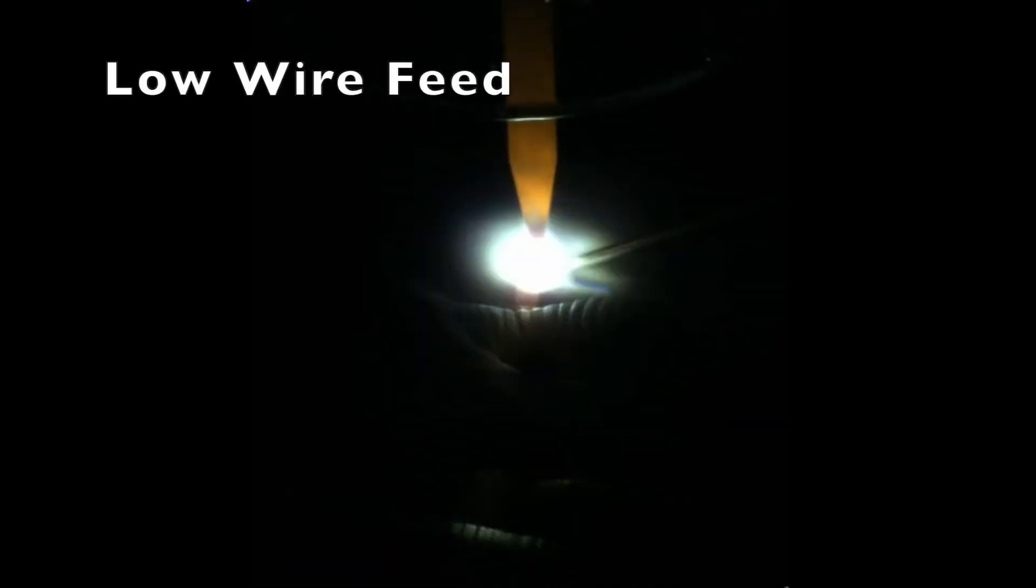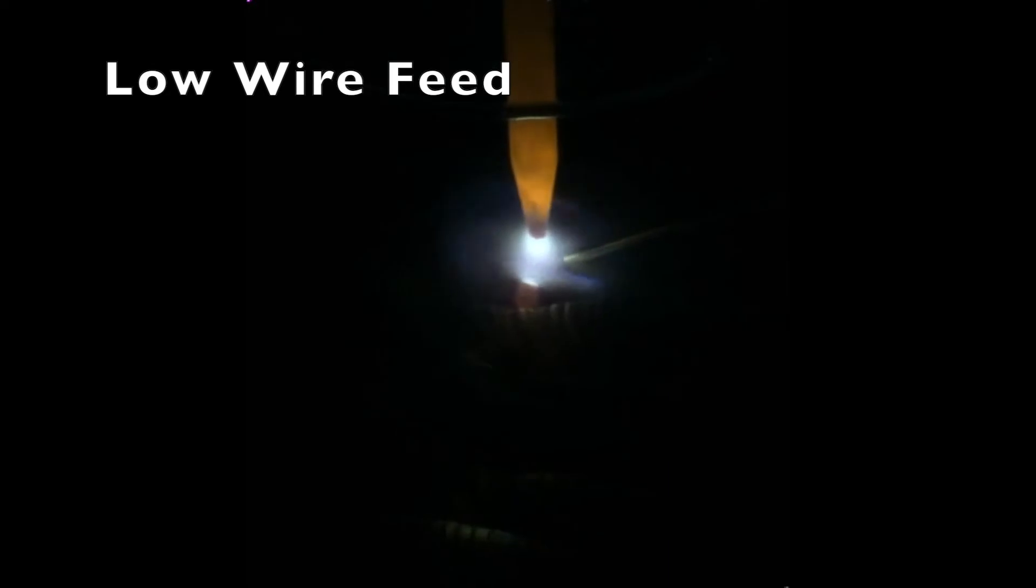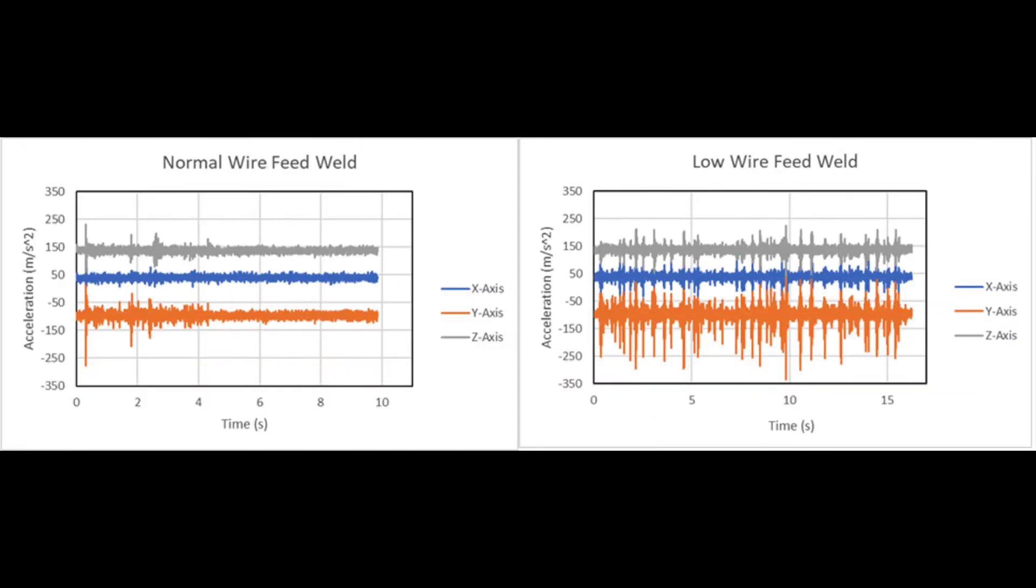A low wire feed weld is when the wire feed is too low, causing the line to drag on the surface and makes the wire excessively vibrate. Our charts from the accelerometer show a clear indication that the wire feed is dragging and potentially creating a defect.